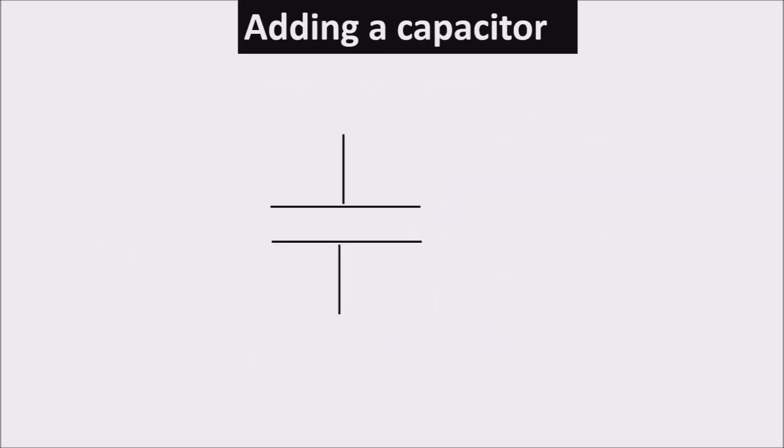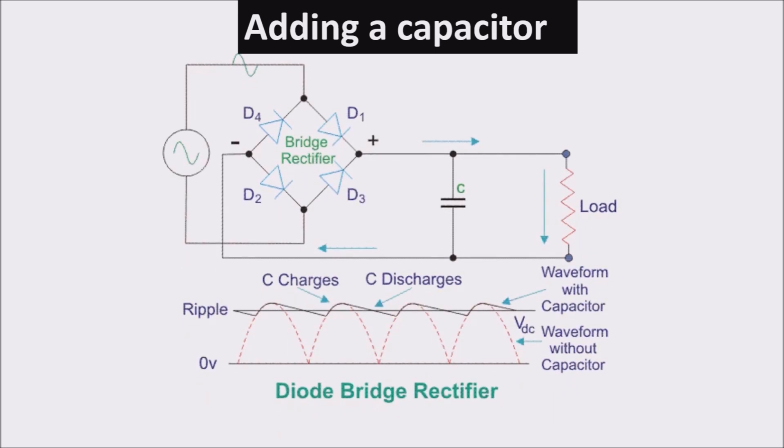In order to stabilize it, we use a proper capacitor on the output. The capacitor cannot discharge quickly, so it lowers slowly its voltage till the next recharge cycle, and so on.